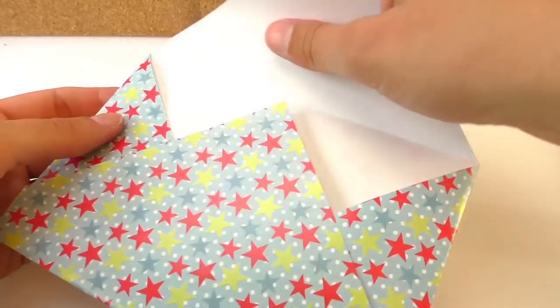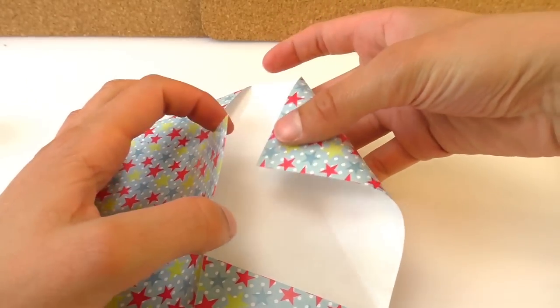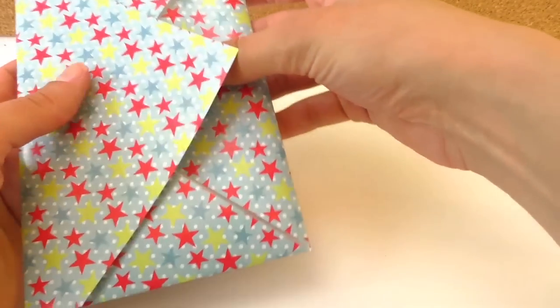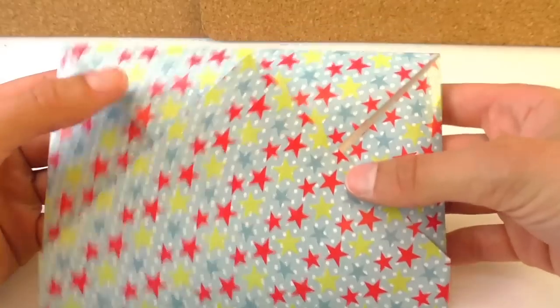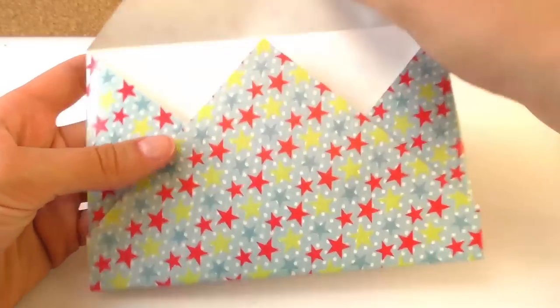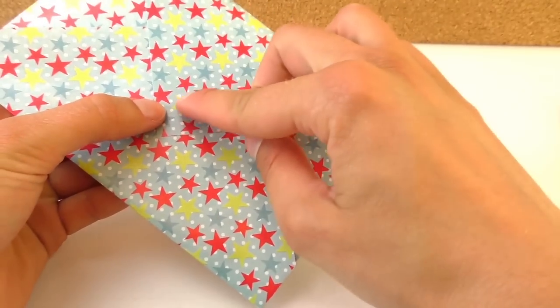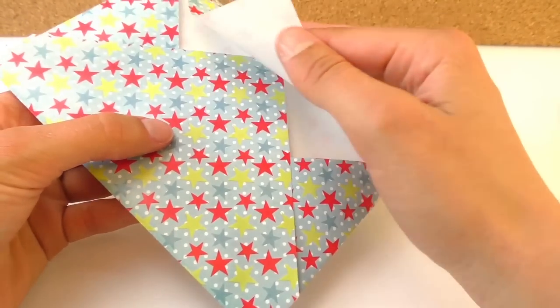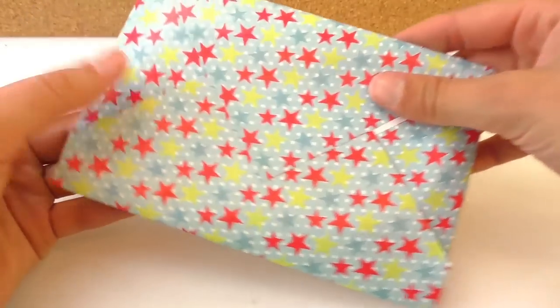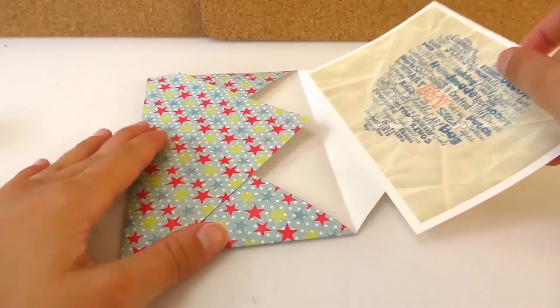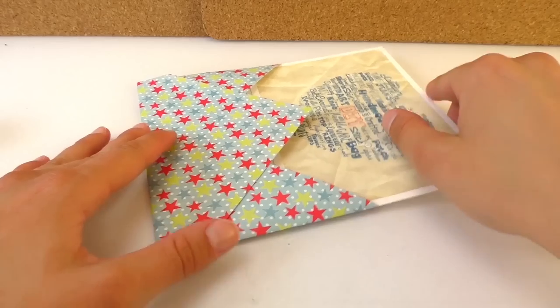And once it's dry we can grab the top part and tuck it in below. Like this. And that's one way of closing it. It looks really cute. Or another one is we can put the postcards inside and then close it like this. And we can either glue it or just put a stamp right here. So let's try it.